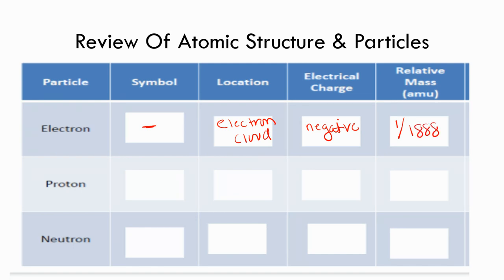We know a proton is positive. We know the symbol for positive is the plus sign and the location is in the nucleus. And the relative mass is 1.